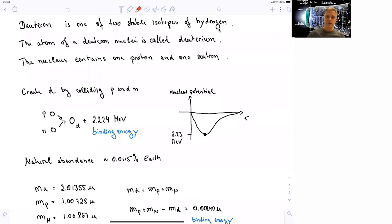Welcome back to A20, Special Relativity. In this section, we want to talk about the deuteron, which is one of the two stable isotopes of hydrogen. The atom is called deuterium. The nucleus actually contains one proton and one neutron. So it's quite simple.